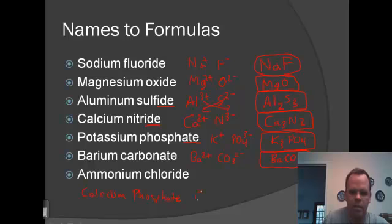Calcium is plus 2, phosphate is 3 minus. So we would need Ca3. We would need 2 PO4, so we would put PO4 in parentheses and the subscript 2 on the outside. And this last one, ammonium NH4 plus, chloride Cl minus, so it's NH4Cl.